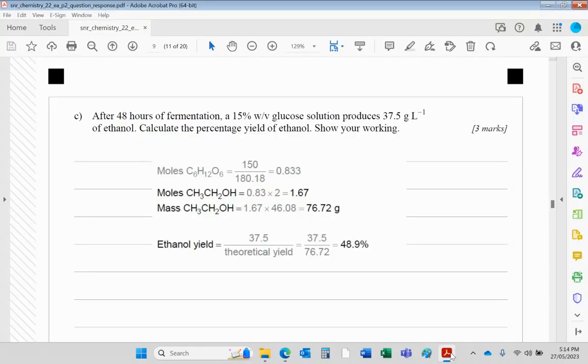Part two of this question. A couple of things you unfortunately would need to know to do this question. That first thing is this w to v, which means weight to volume or mass to volume of glucose. You'd need to know that the volume in this case is 100 mL, that's a standard unit for w over v.